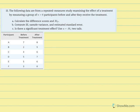We're instructed to calculate the difference scores and the average mean difference, compute the sum of squared deviations, sample variance, and estimate standard error. Then we're asked to determine if there's a significant treatment effect by using alpha at 0.05 for a two-tailed test.